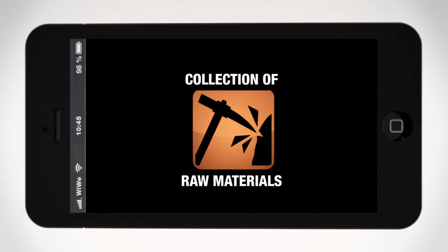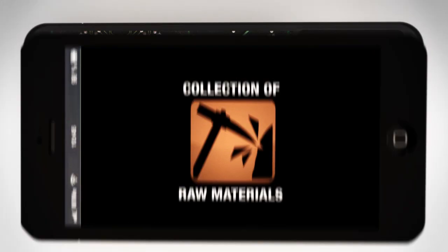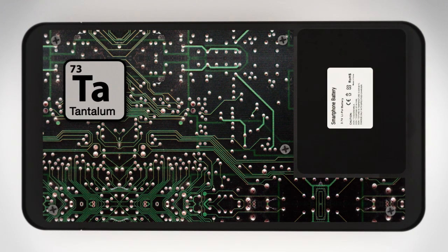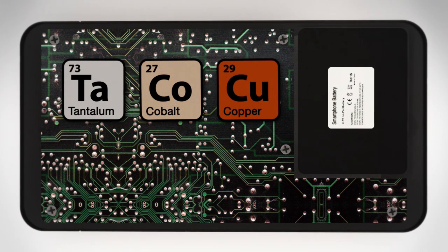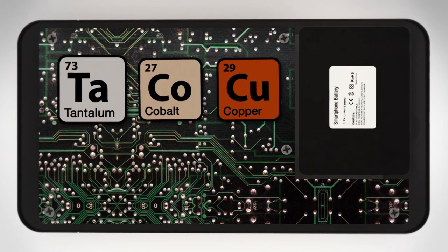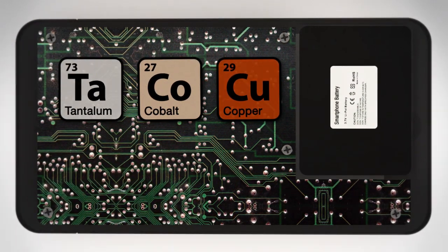The production process starts with the collection of raw materials. For a smartphone, a whole variety of materials is needed. Metals such as tantalum, cobalt, and copper are particularly important.